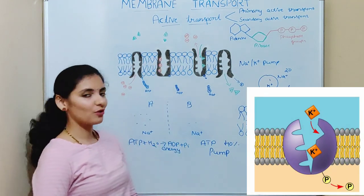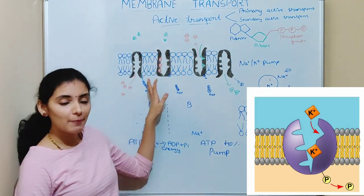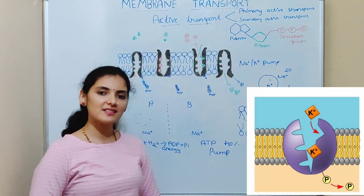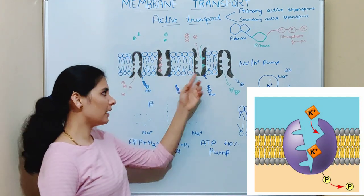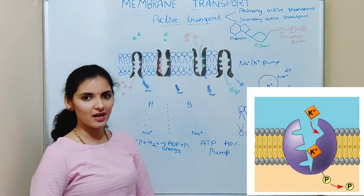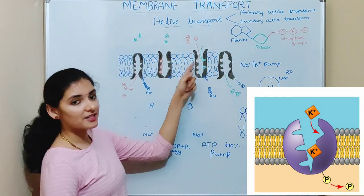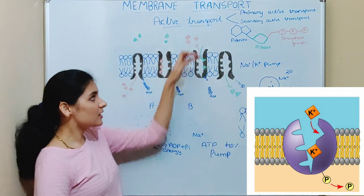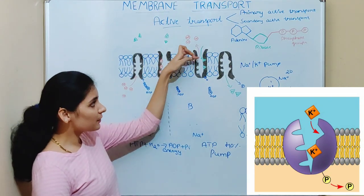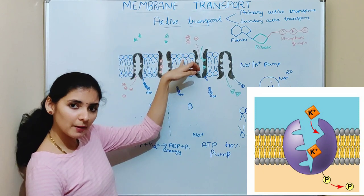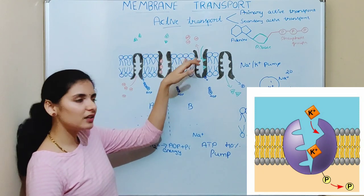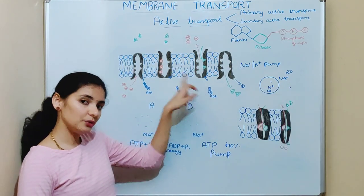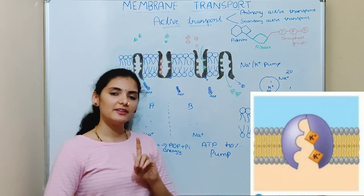In its outward-facing form, the pump has affinity towards potassium ions. As a result, 2 potassium ions come and bind to the pump, because it has 2 binding sites for potassium ions. As soon as the potassium ions bind to the pump, this triggers the release of a phosphate group.